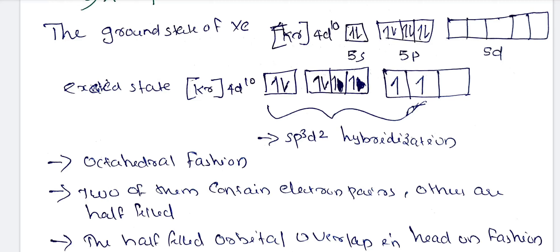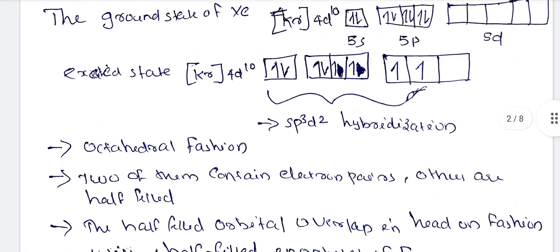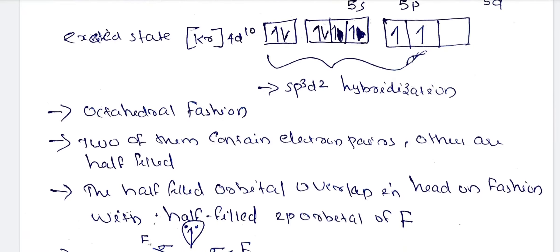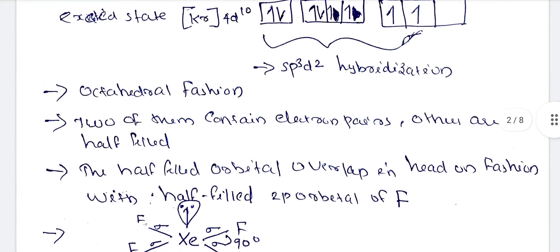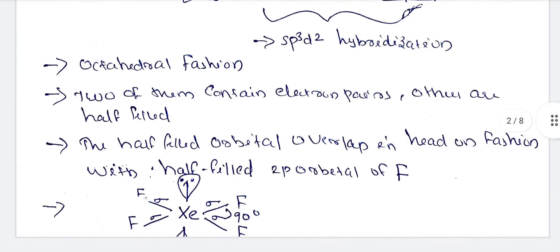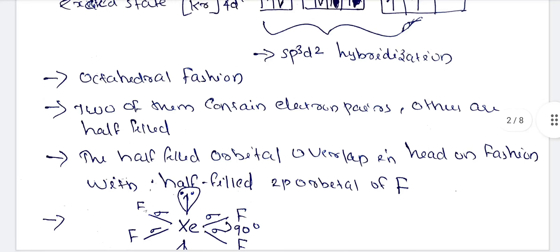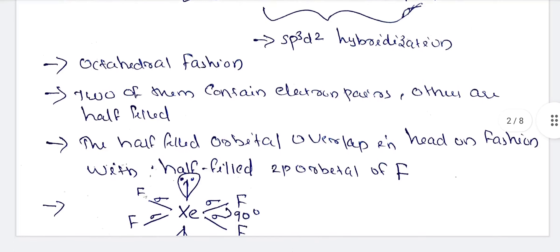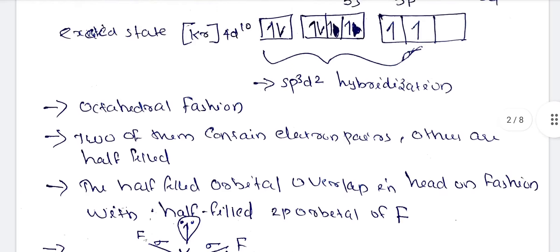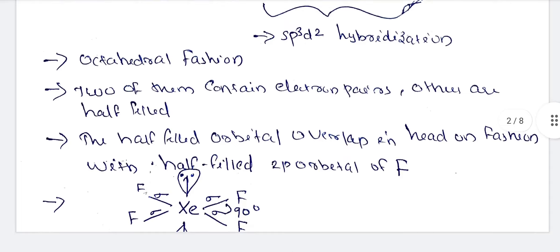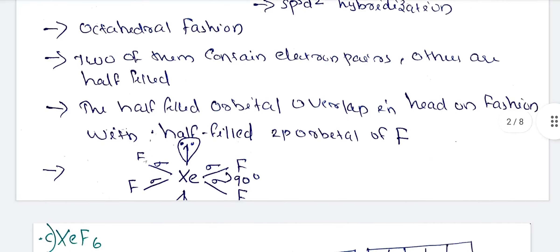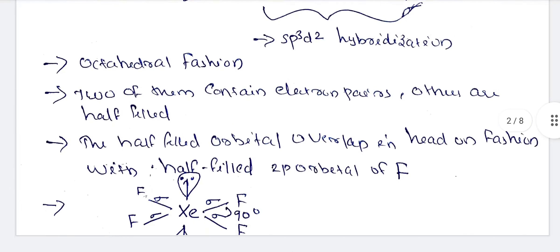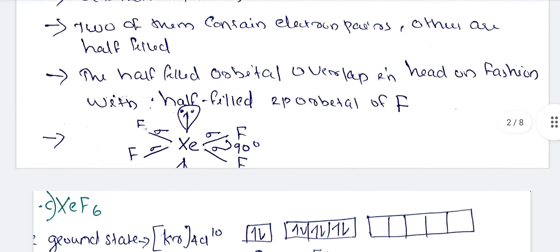sp3d2 hybridization occurs. We are going to use sp3d2 hybridization with octahedral geometry. There are 2 lone pairs and 4 half-filled orbitals. The 4 half-filled orbitals overlap head-on fashion with the 2p orbital of F. The 2 lone pairs occupy opposite axial positions. This is the octahedral structure with bond angle of 90 degrees.